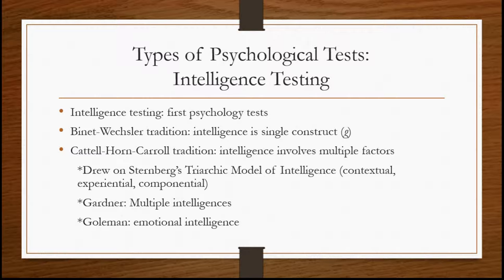I wanted to talk about some of the different types of psychological tests. One we've already mentioned is intelligence testing, which seems to have been the first psychological test. There are a couple of different traditions within psychology: the Binet-Wechsler tradition, based on the work of Alfred Binet and David Wechsler, which is rooted in the idea going back to Spearman that intelligence is a single construct — though that idea has fallen out of favor, and even the Wechsler tests now look at intelligence as involving multiple factors and dimensions.